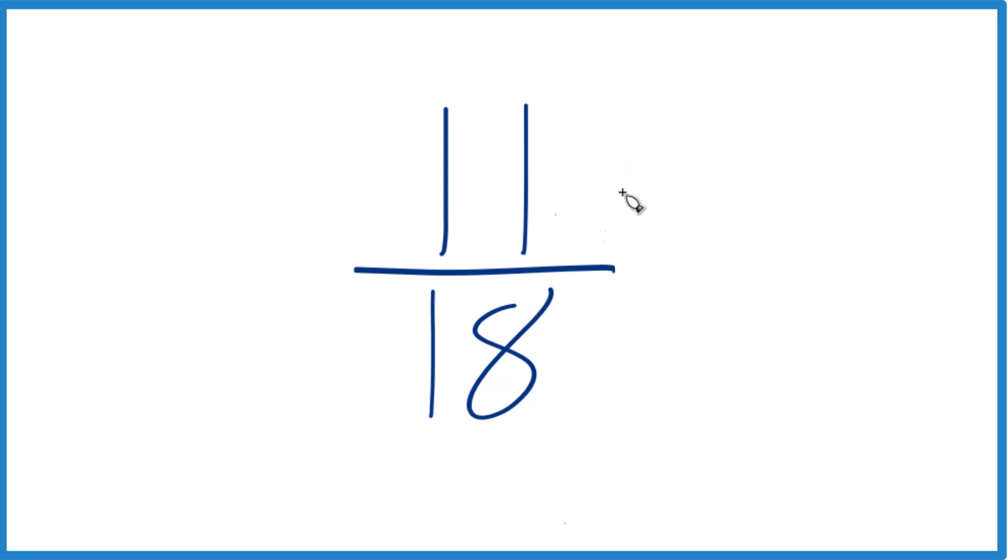So if we write the factors for 11: 1 times 11, that equals 11. And then for 18 we have 1 times 18.